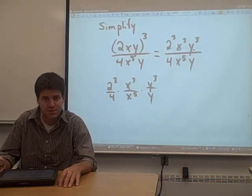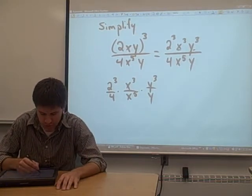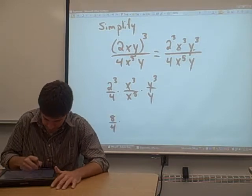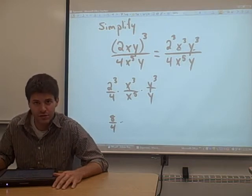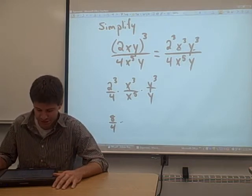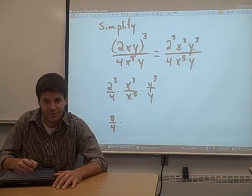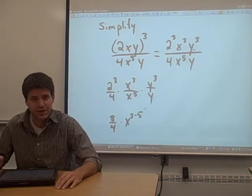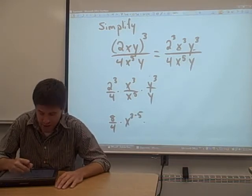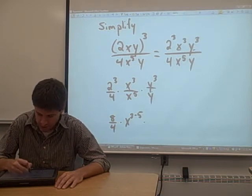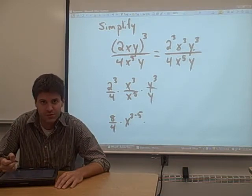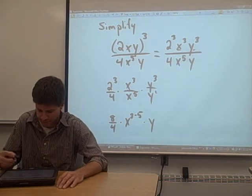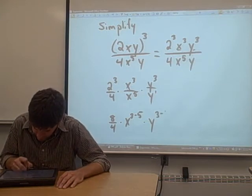Now, each one of these three pieces can be simplified. 2 cubed is just 8, so we have 8 over 4, which of course is 2. x cubed over x to the 5th: we can use the property of exponents that says when you have a similar base and you're dividing two terms, you can subtract their exponents. x to the 3 minus 5 power. This term, again, we have the similar base, different powers. We're dividing, so we can subtract the powers, keeping in mind that there's a power of 1 on that y there. So we get y to the 3 minus 1 power.